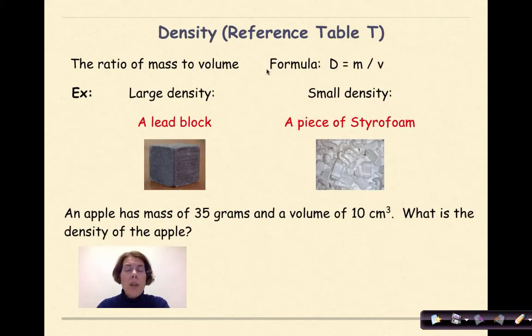The density formula is found on your region's reference table. Density is the ratio of mass to volume, and we use the formula density equals mass over volume. Something that has a large density or is very dense means that the particles are closely packed together, while something that has a small density means that the particles are not packed closely together.